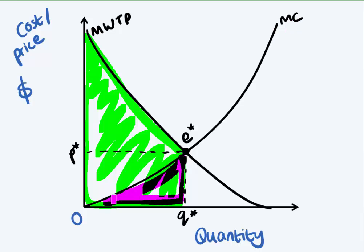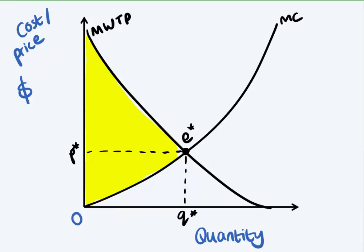So the social efficiency or the net value I'm left with is this yellow area over here, and that's what this curve tells us.